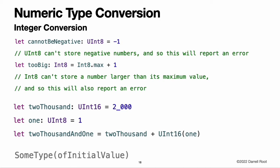Numeric type conversion. Use the Int type for all general-purpose integer constants and variables in your code, even if they are known to be non-negative. Using the default integer type in everyday situations means that integer constants and variables are immediately interoperable in your code and will match the inferred type for integer literal values. Use other integer types only when they are specifically needed for the task at hand — because of explicitly sized data from an external source, or for performance, memory usage, or other necessary optimization. Using explicitly sized types in these situations helps to catch any accidental value overflows and implicitly documents the nature of the data being used.